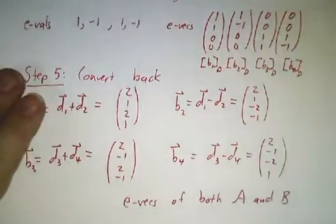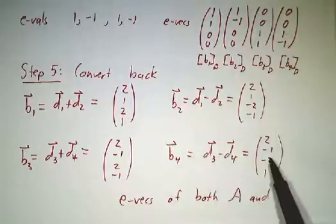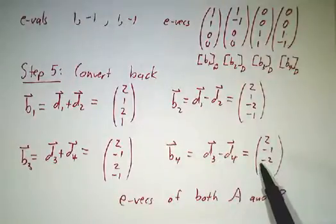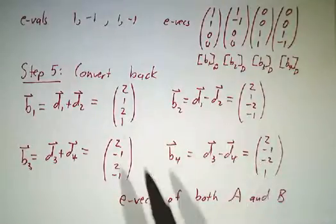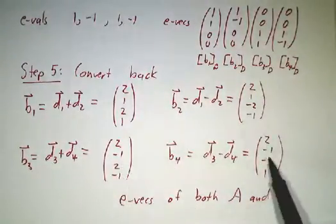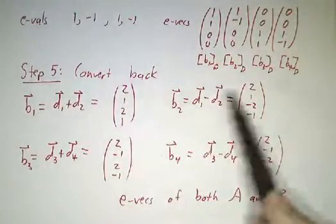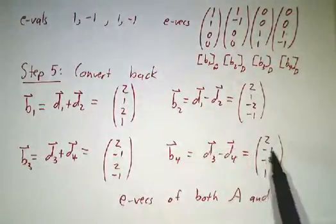And I claim that we're now done. That these are eigenvectors of A and they're eigenvectors of B. They're eigenvectors of A with eigenvalue 2, 2, negative 2, and negative 2. They're eigenvectors of B with eigenvalues 1, negative 1, 1, and negative 1.